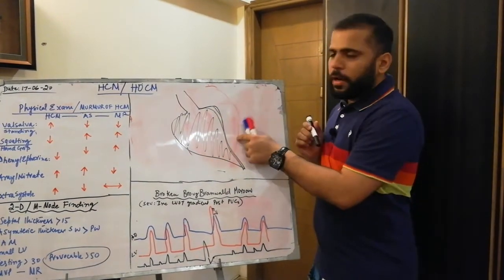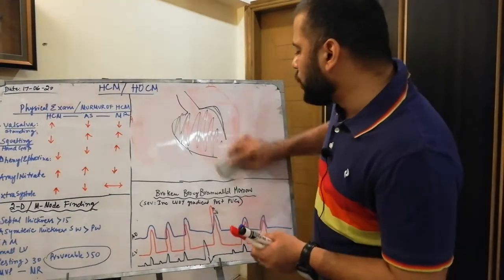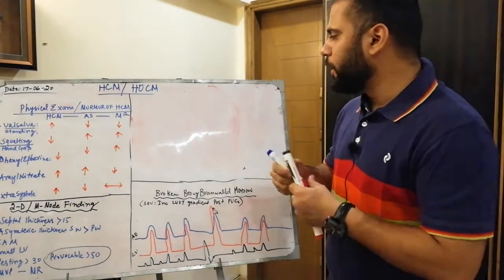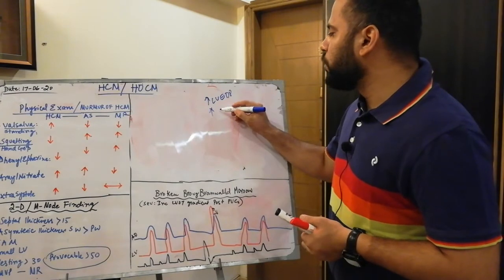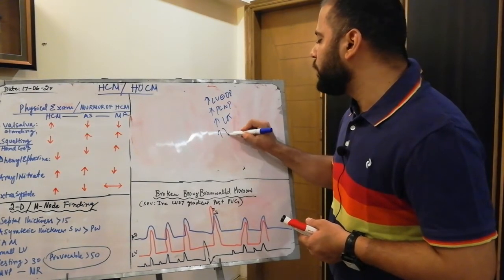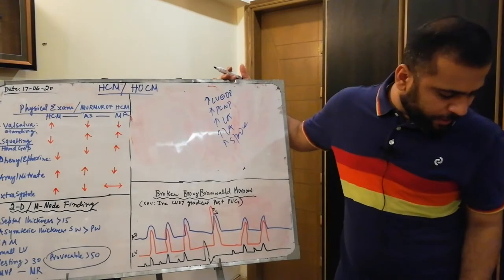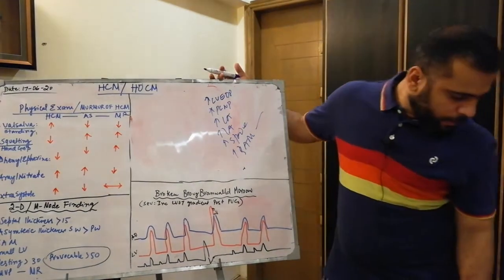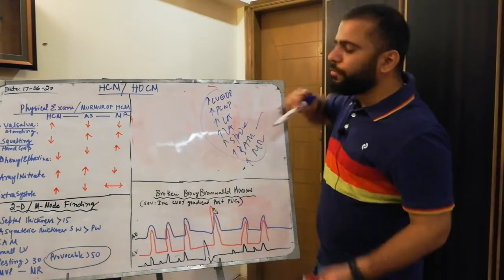The hemodynamic findings on cath include: increased LVEDP because of thickness and diastolic dysfunction, increased pulmonary capillary wedge pressure, increased LA pressure, possible LA enlargement, and a spade-like shape of the ventricle on ventriculography. Mitral regurgitation may also be found on cath in your HCM patient.